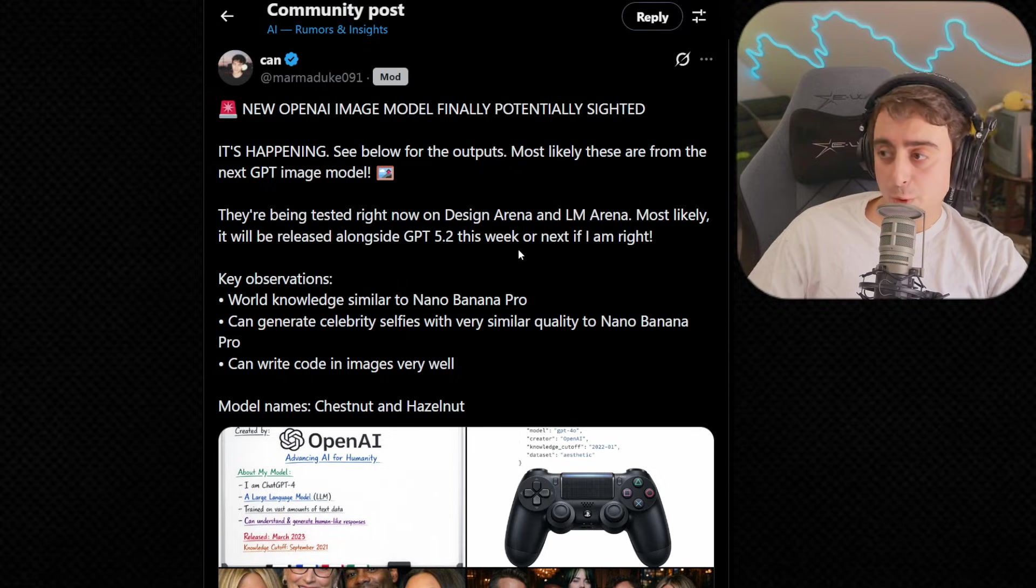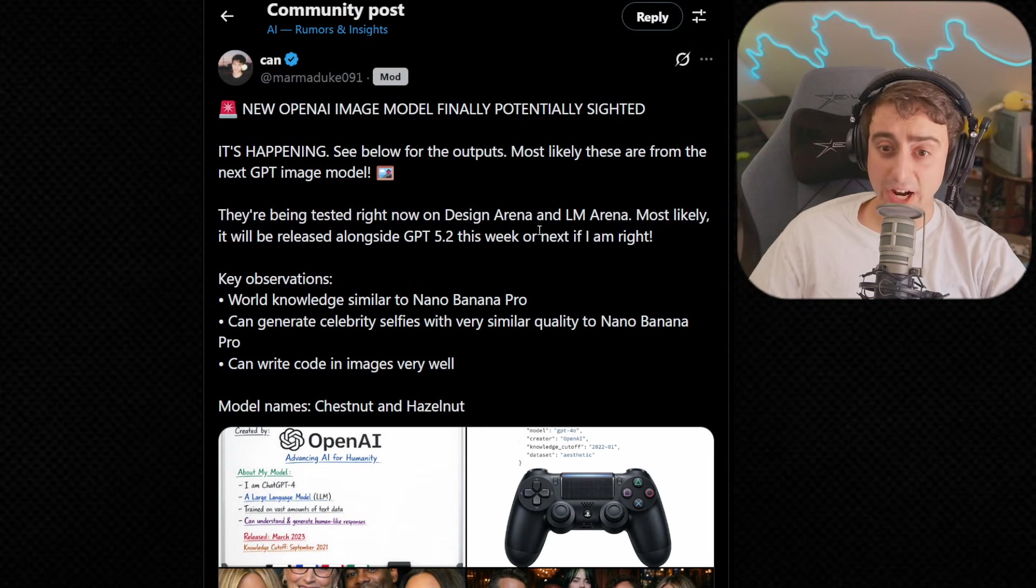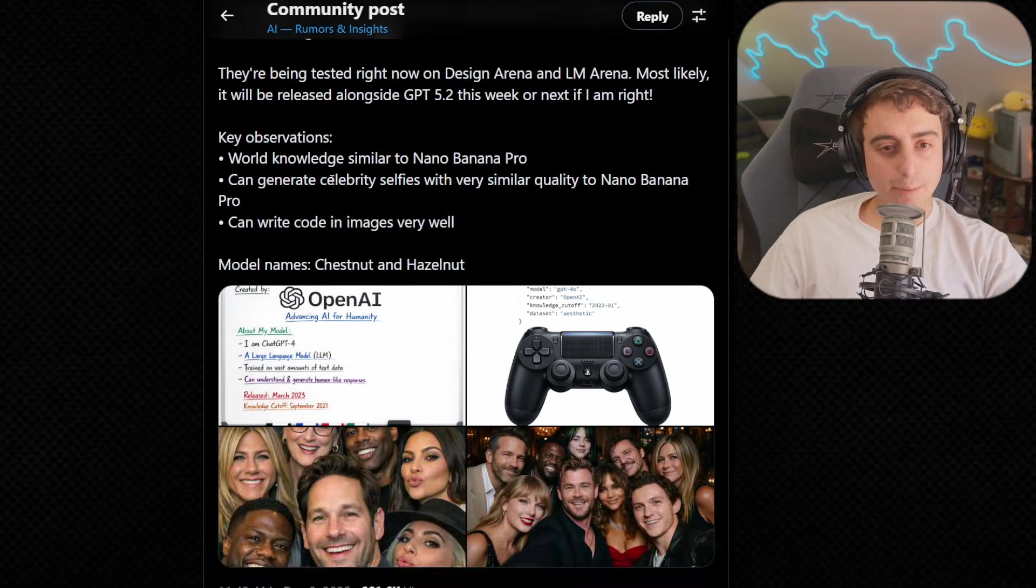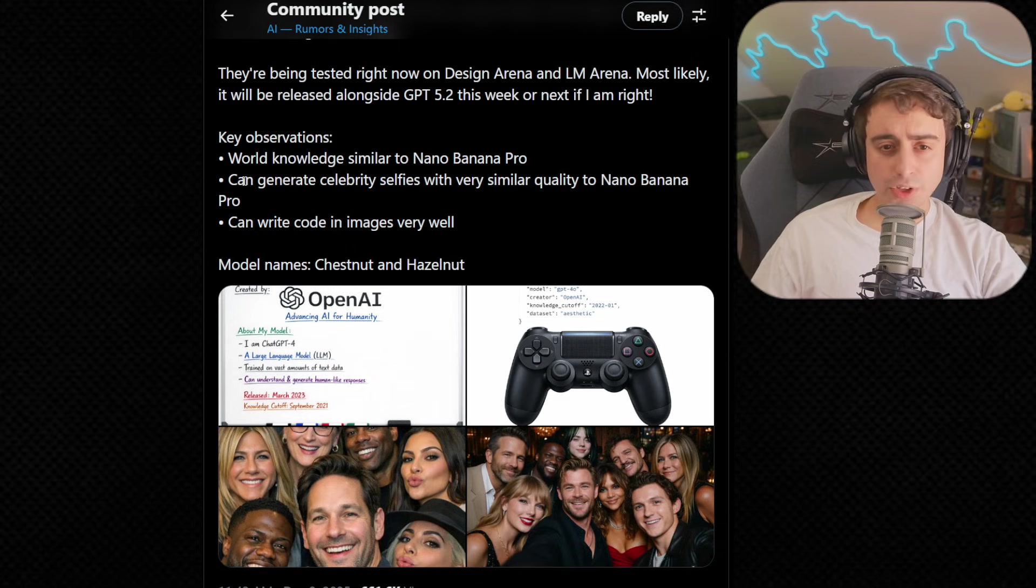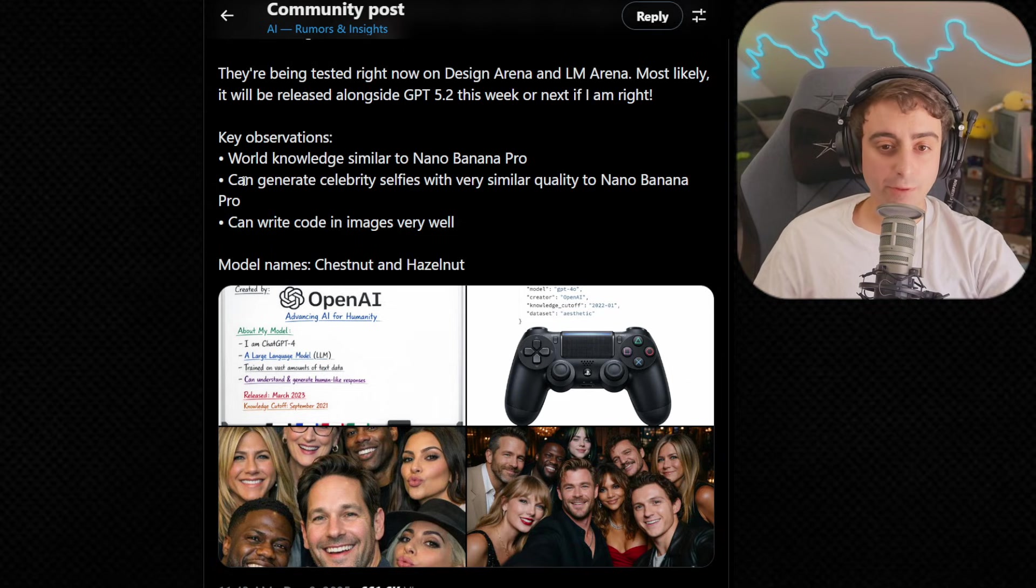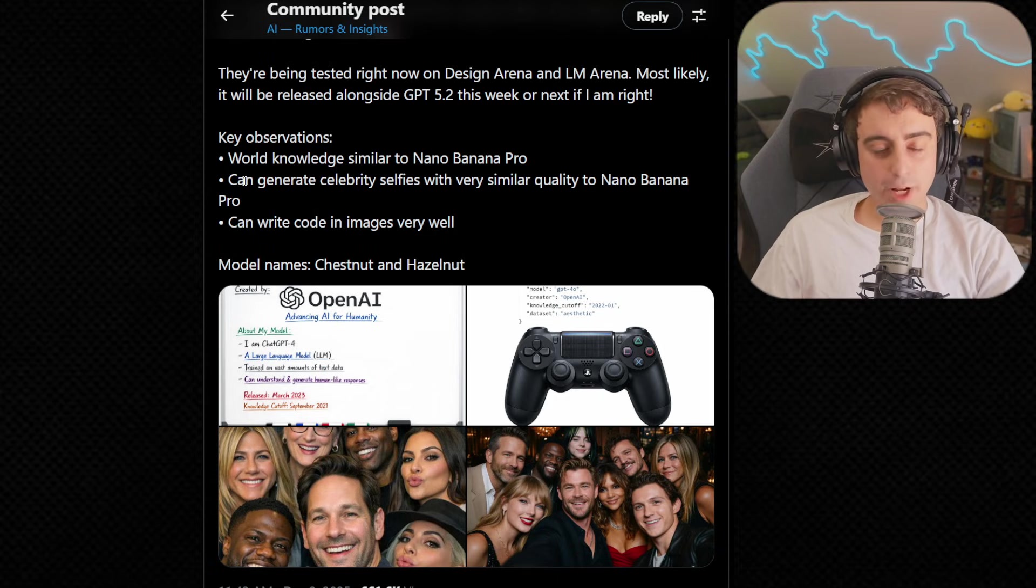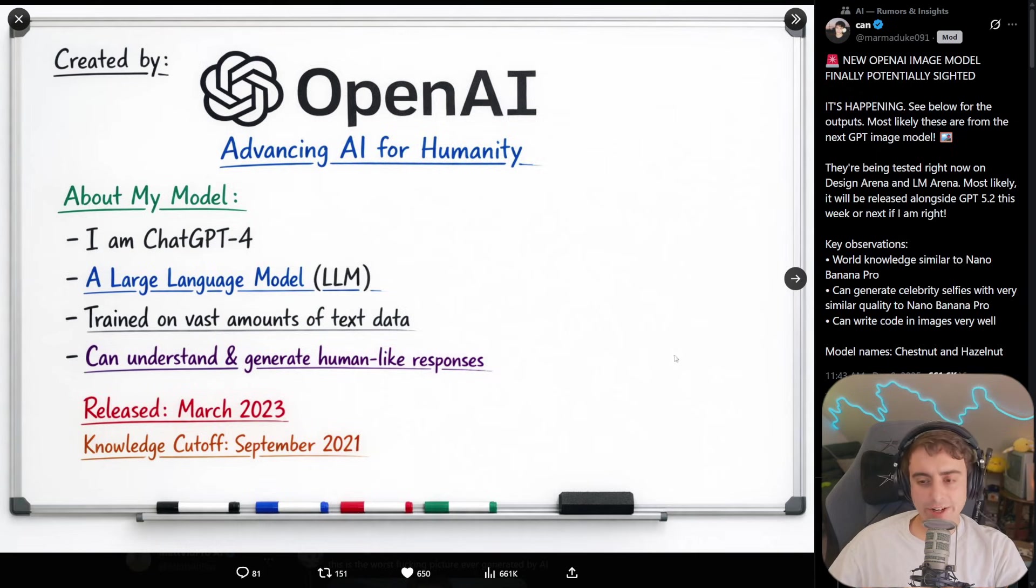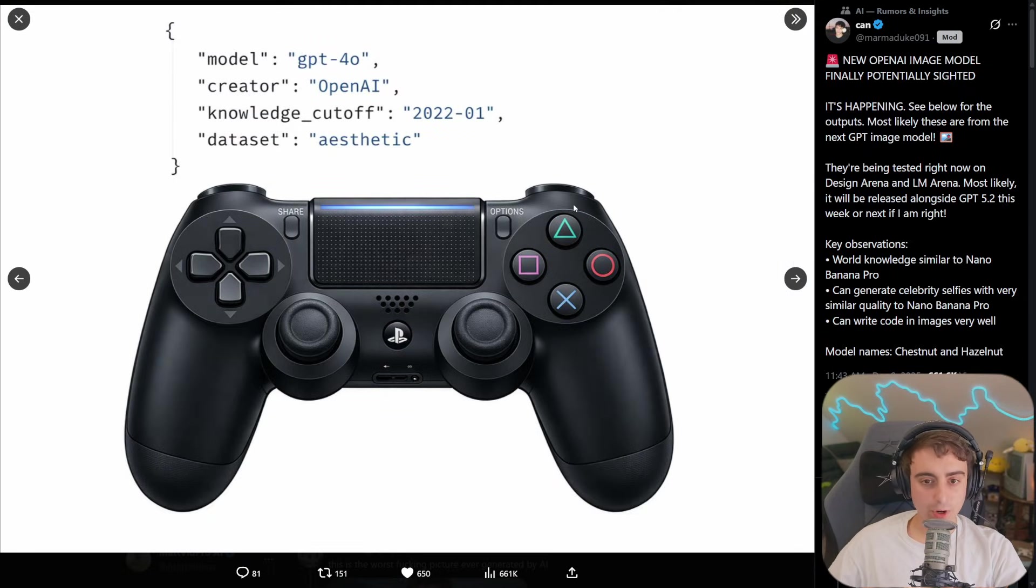By the way, if you want to get early access to these models, Cannes says that they're being tested in Design Arena and LM Arena. Cannes made a few observations on this model. World knowledge seems to be similar to Nano Banana Pro. Celebrity selfies are generatable with a similar quality to Nano Banana Pro. Can write code and images well. Here is a whiteboard showing some pretty advanced text generation, but nothing absolutely mind-blowing. PlayStation 4 controller generated nearly flawlessly.